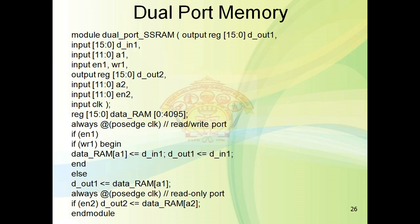Since we are writing a flow-through SRAM, data by default moves to the output port. We define the memory array as a register [15:0] data_RAM with 4K memory locations, indexed from 0 to 4095, so data_RAM[0:4095].